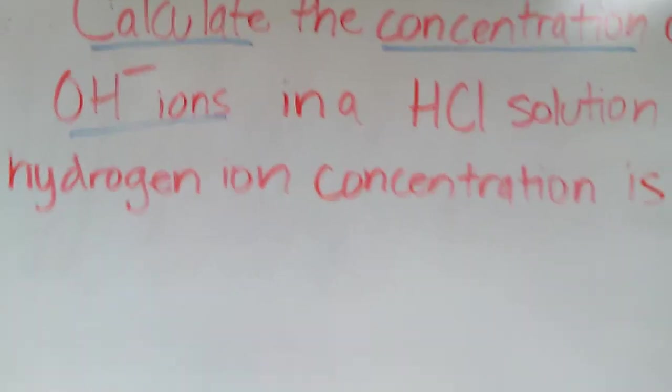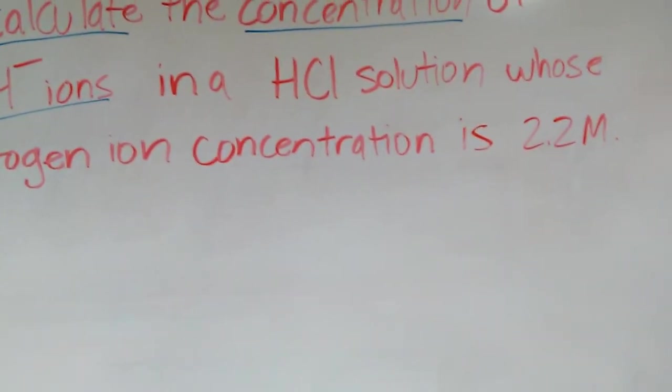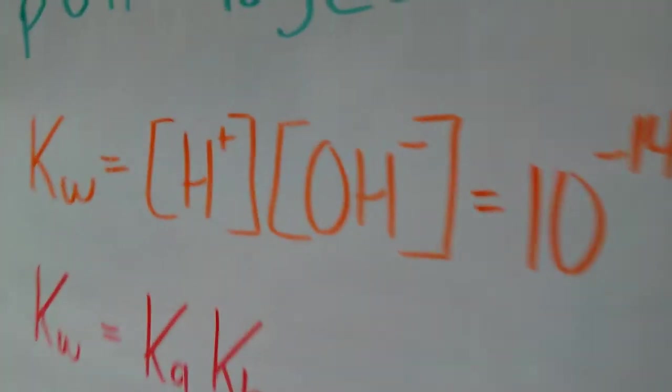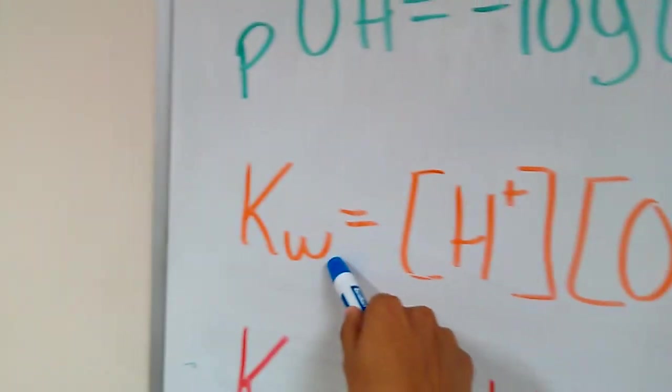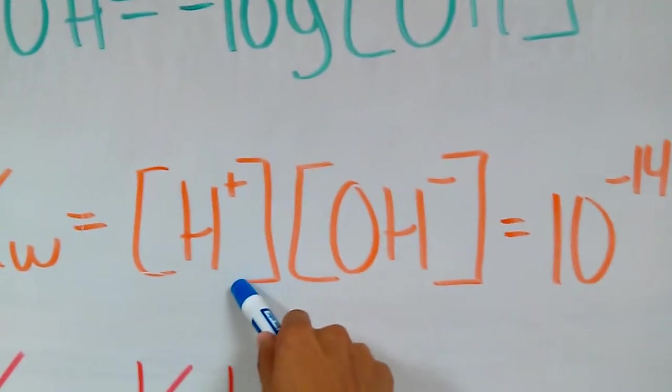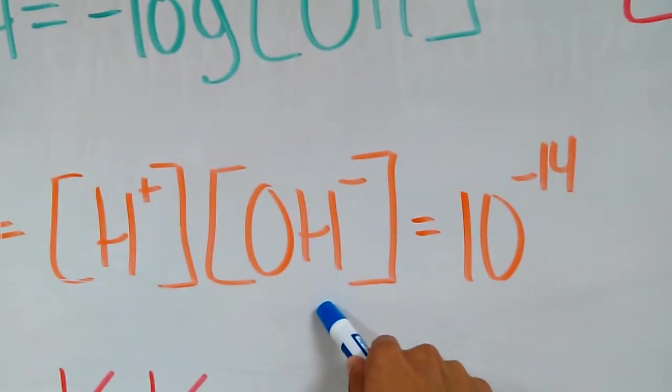And as soon as you see that, you should automatically know that you will be utilizing this equation here, where your water constant is both your hydrogen and hydroxide solutions mixed together.